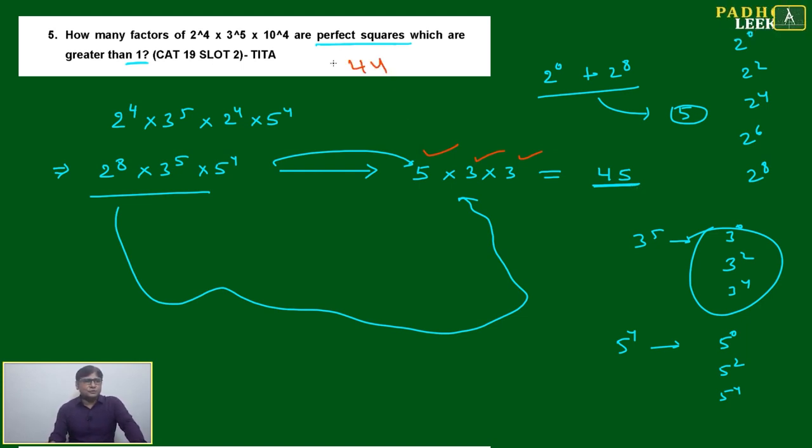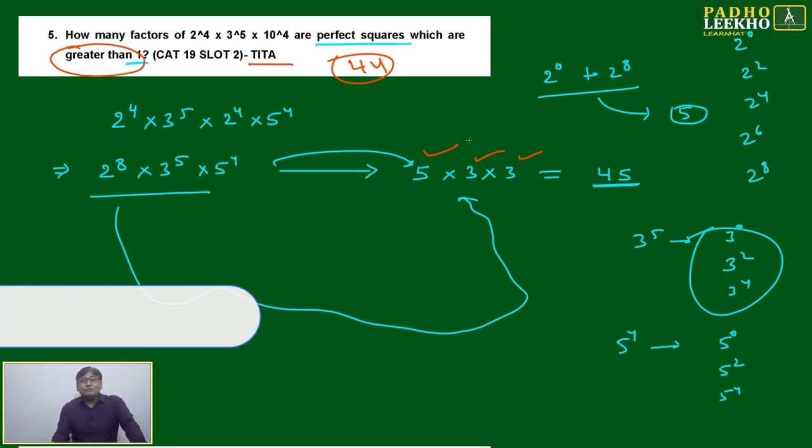But the answer will not be 45, just reduce 1. Because the question has given greater than 1. If it is not given greater than 1, then you can write 45. This is the TITA-based question. But here you have to write 44.